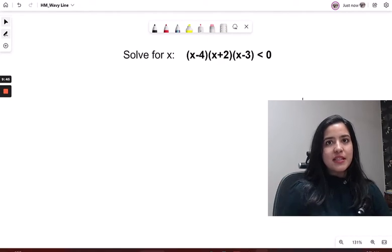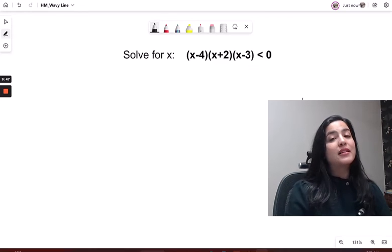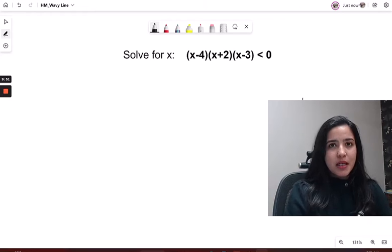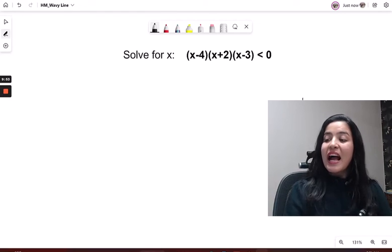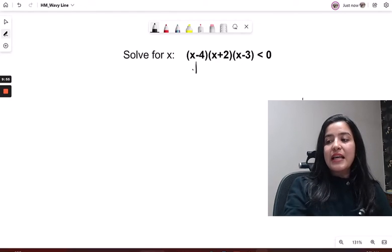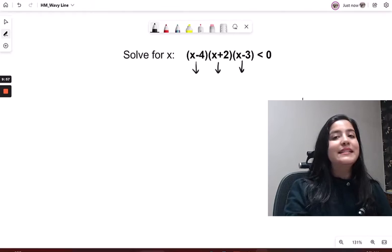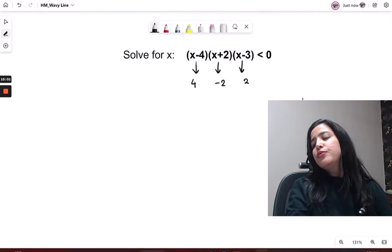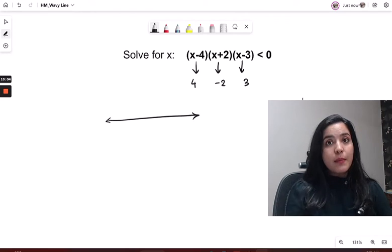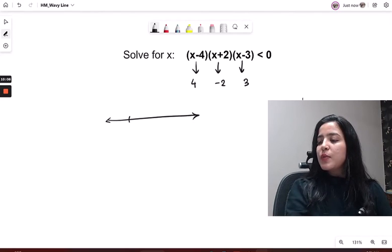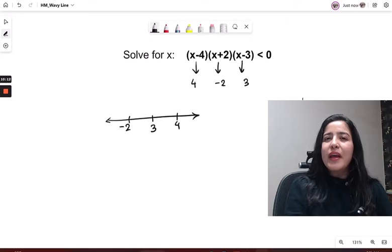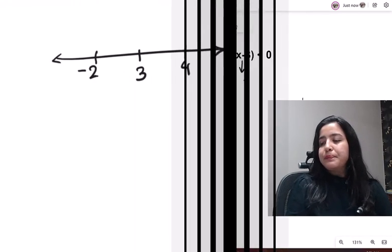For now, let's continue. Remember, this is what we started with. This is the hard question I had showed you at the top. Now, the best part is nothing changes. My method will not change. I will still get breakpoints. Again, the places where these factors are equal to zero. I'm going to get four, negative two and three. I'm going to put them on the number line. So the smallest one is which one? Negative two. Then there's three, then four. So you always need to put them in order just like how they would be on a number line.